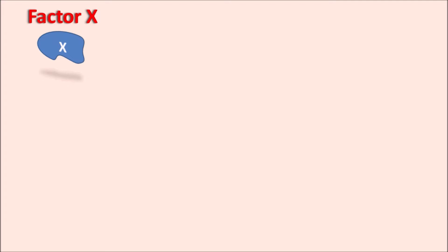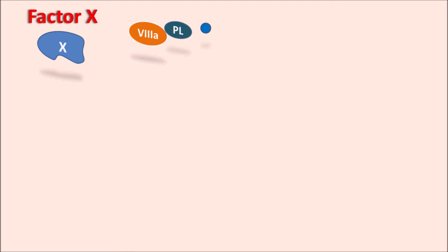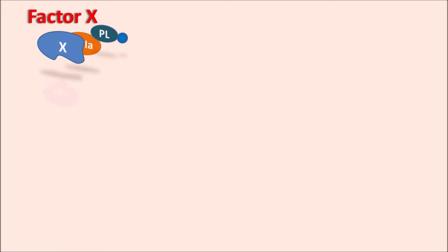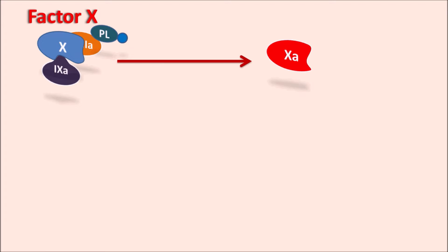One important clotting factor in both the extrinsic and intrinsic pathways is Factor X, where both pathways merge leading to further coagulation cascade. Factor X is present as an inactive precursor or zymogen, and it is activated by factors like Factor 8a, phospholipids, and calcium, along with the binding of Factor 9a. This complex results in activation of Factor X to Factor Xa — the Stuart factor.